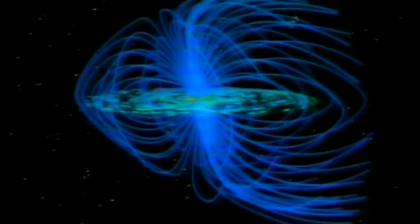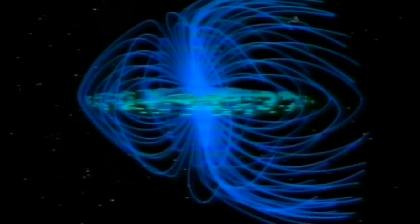Quand le vent solaire s'engouffre en direction de la planète, des aurores se déploient au-dessus des pôles. Ces halos sont chargés de particules qui interagissent avec la couche supérieure de l'atmosphère.